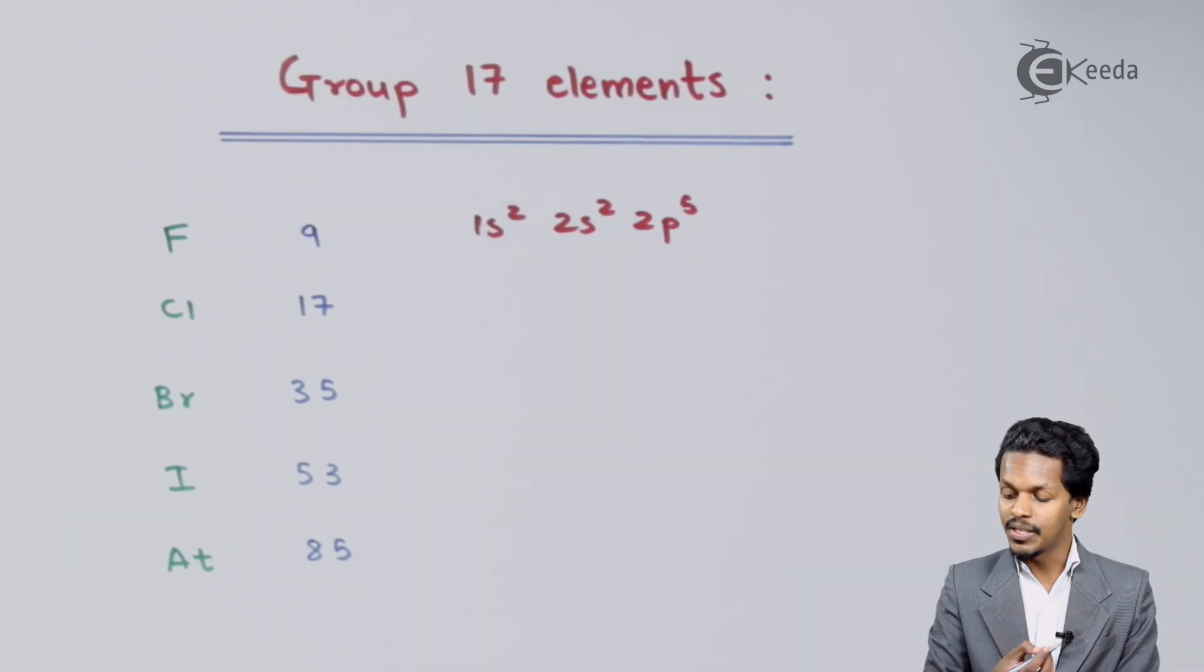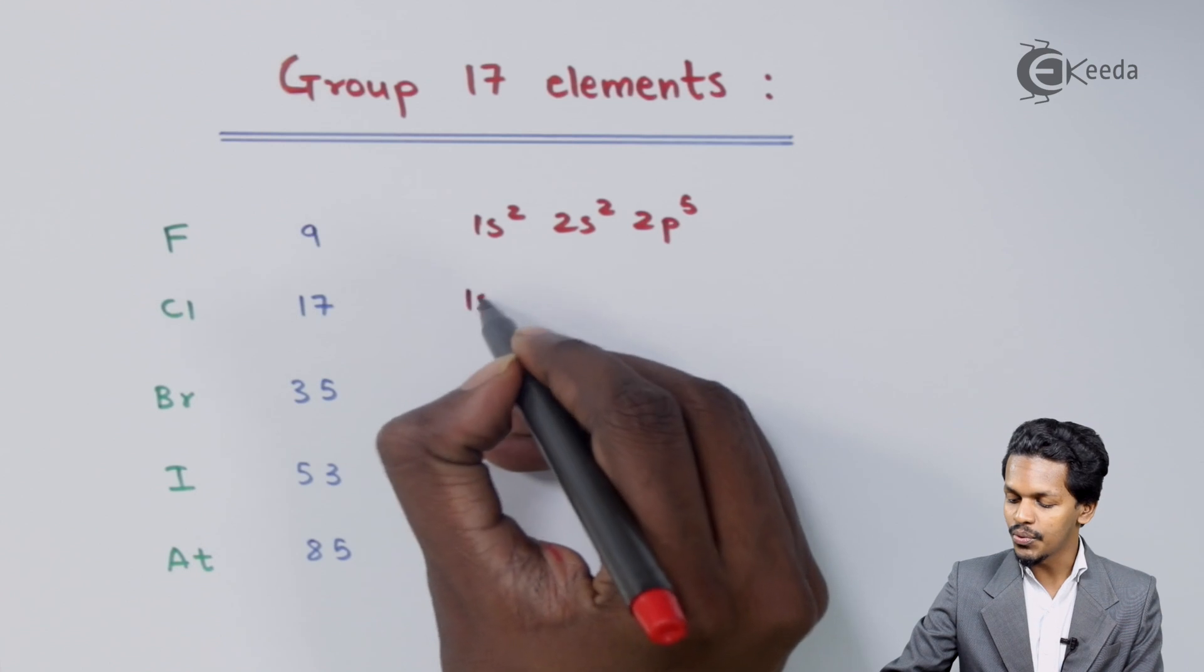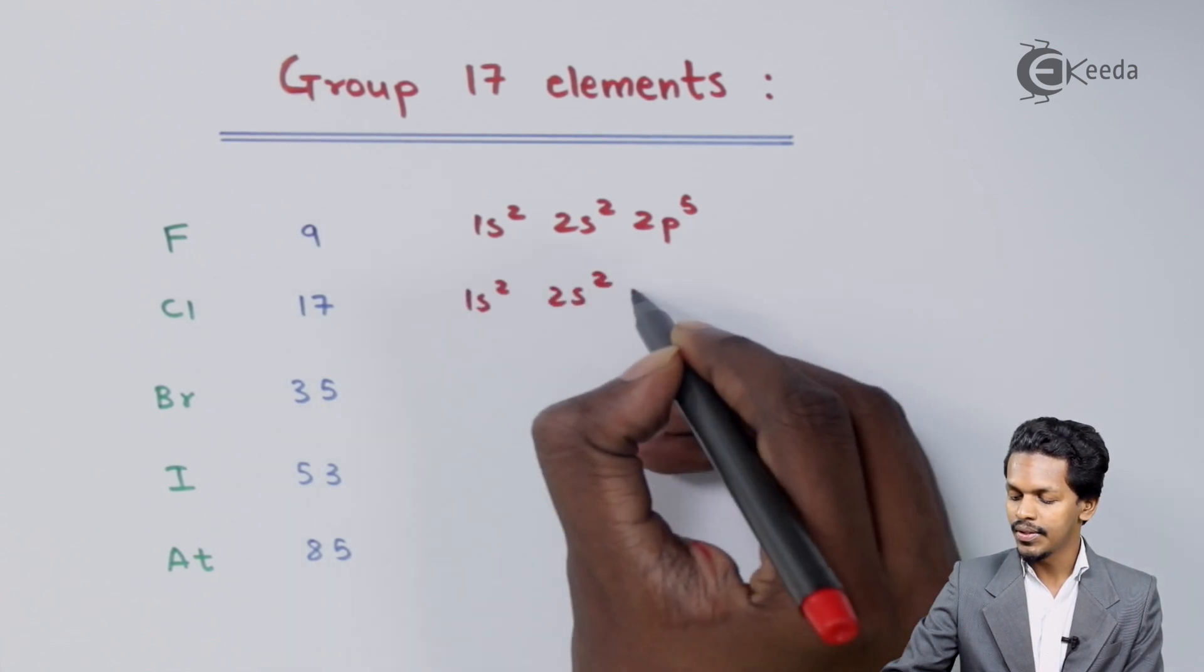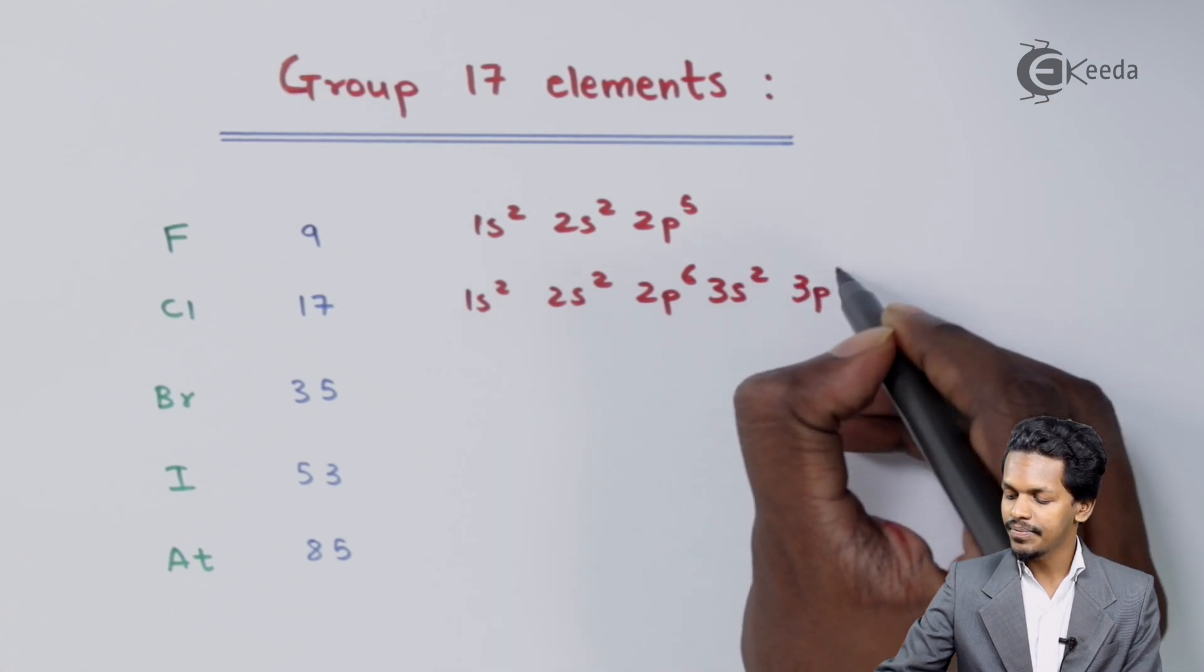Similarly, I can write the electronic configuration for Chlorine as 1s² 2s² 2p⁶ 3s² 3p⁵.